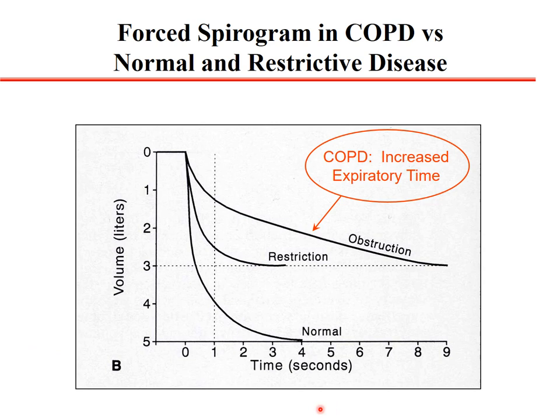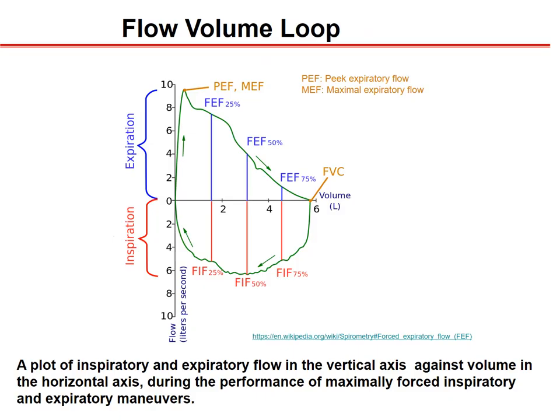In the volume-time graph for different diseases: normal FVC is about 5 liters with most air exhaled in the first second. In restriction, the shape of the graph is similar but the residual volume is elevated. In obstruction, the FEV1 over FVC ratio is very low because the curve decreases very slowly. In the flow-volume loop, inspiration and expiration can be measured simultaneously, and measurements such as FEV1, FVC, and inspiratory flows can be read from different portions of the curve.